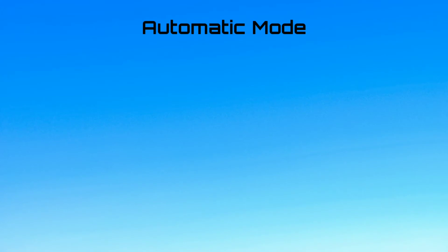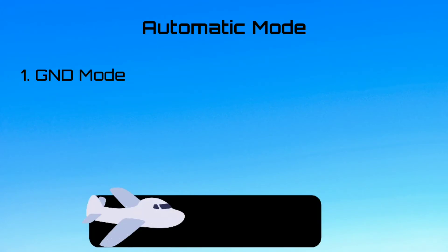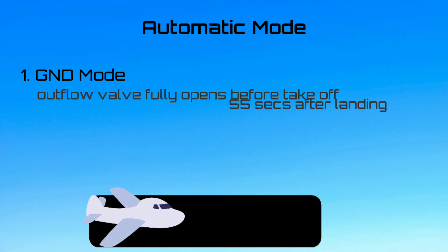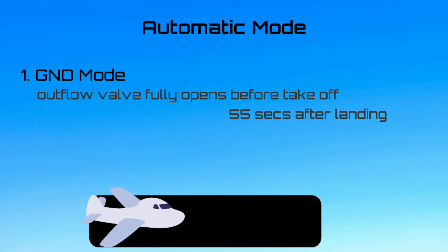In the automatic mode, the CPC controls the pressurization through the following six modes. Ground mode: the outflow valve completely opens before takeoff and 55 seconds after landing at a cabin vertical speed of 500 feet per minute. This releases any residual pressure inside the cabin.